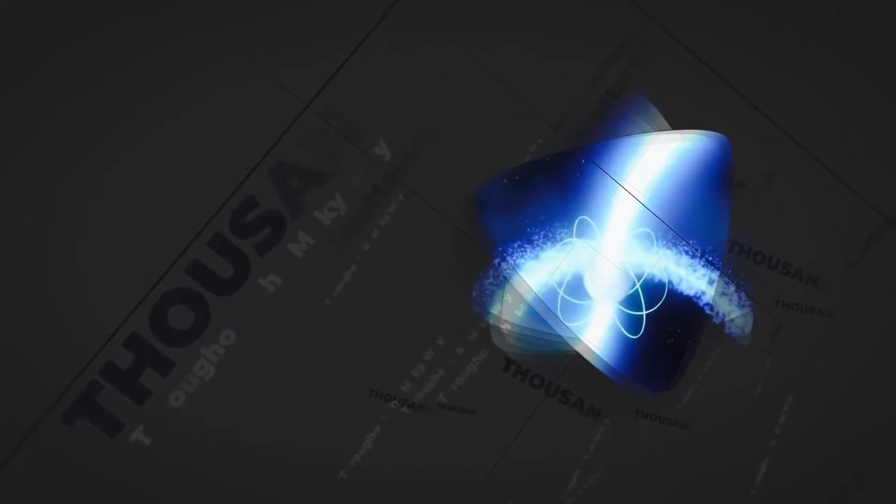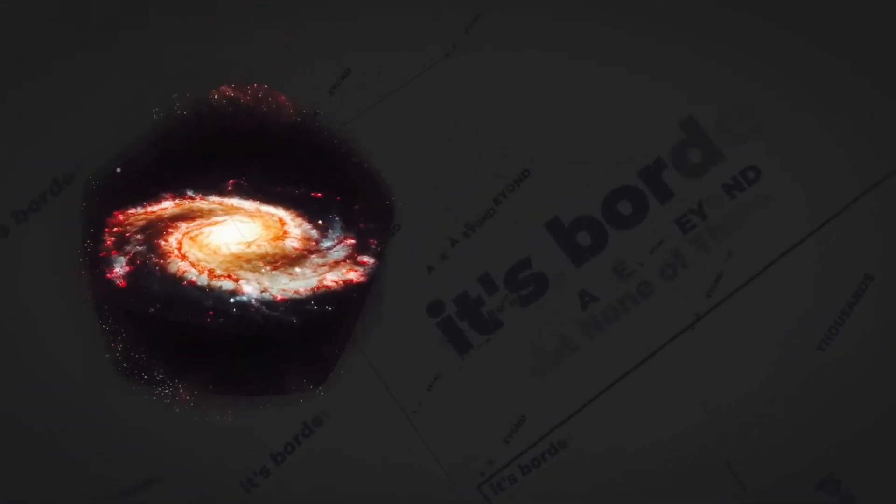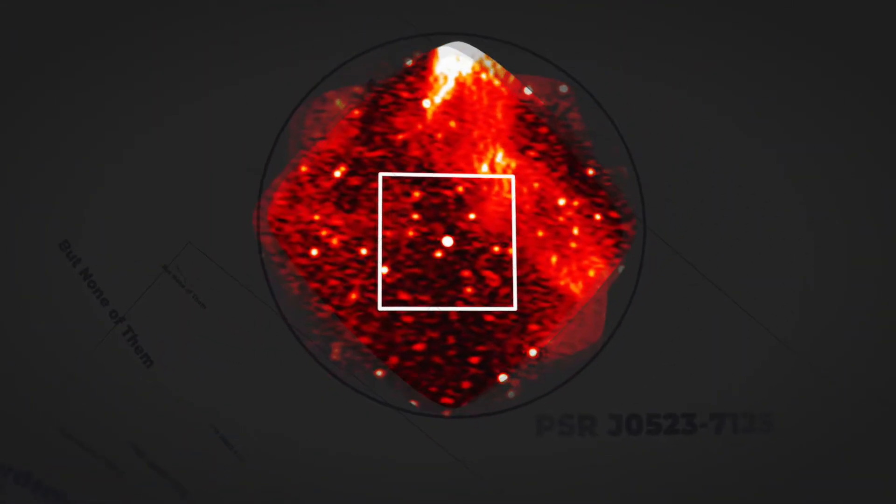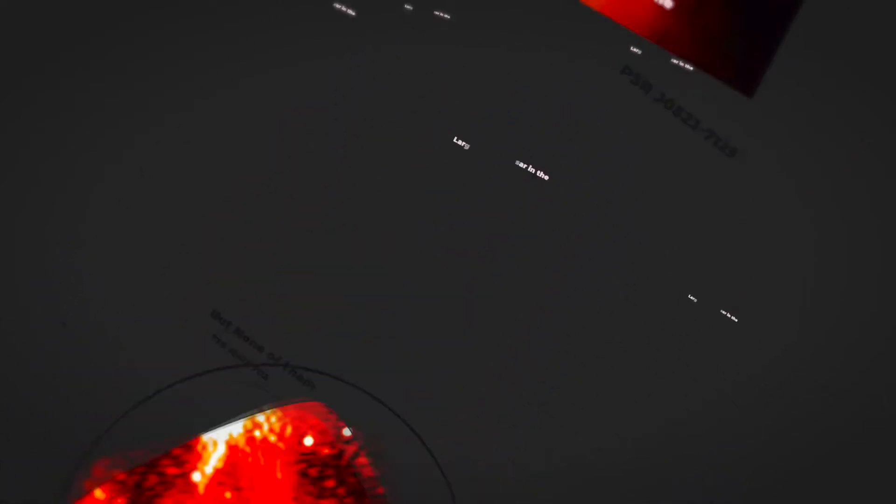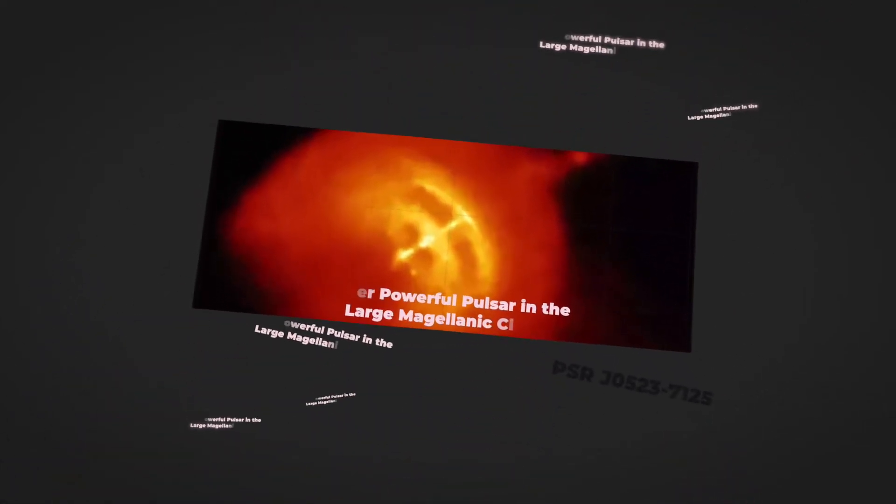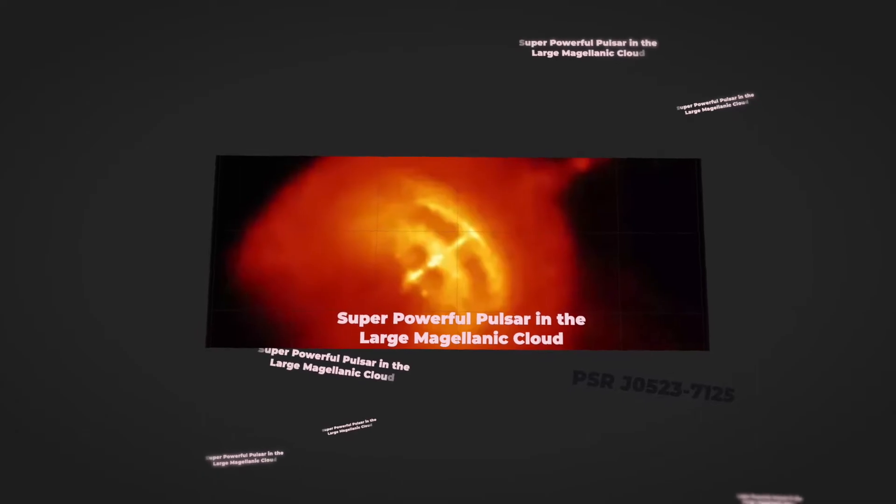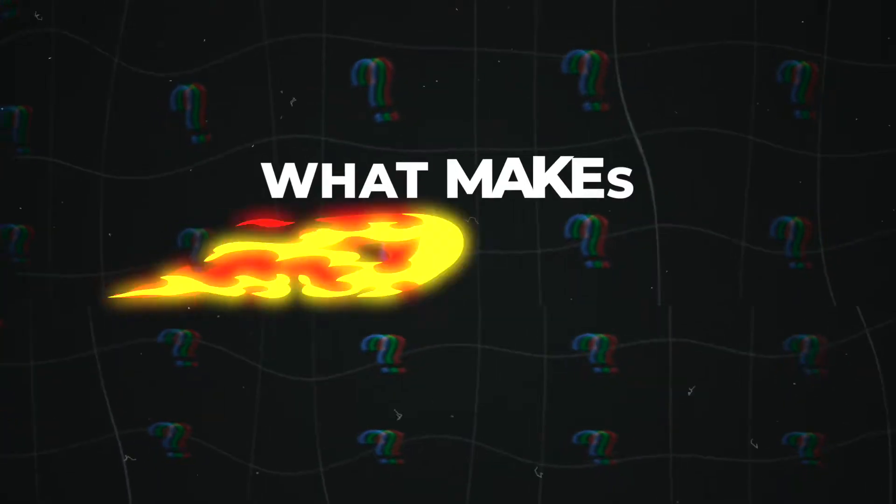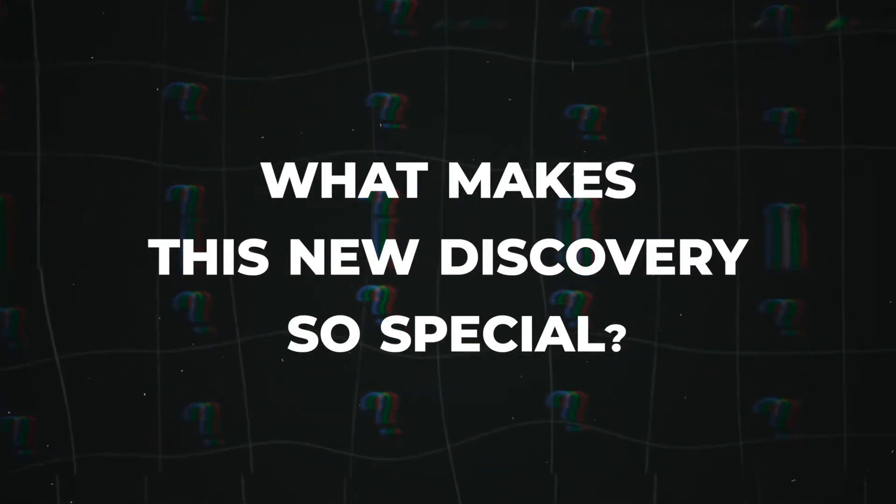Astronomers have found thousands of pulsars scattered throughout the Milky Way and a few beyond its borders. But none of them hold a candle to the super-powerful pulsar that was just discovered outside of our galaxy in the body of the Large Magellanic Cloud. So what makes this new discovery so special?